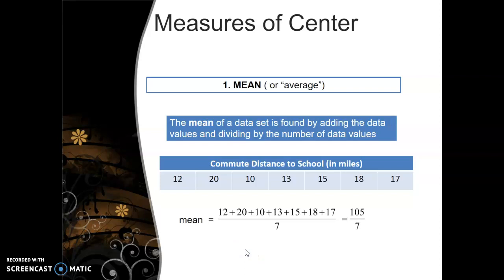In this case, we get 105 divided by 7. Now, depending on your homework problem, some homework problems will want you to write your answers as reduced fractions, and other homework problems will want you to write your answers as decimal values. In this case, it doesn't matter because 105 divided by 7 reduces to 15, so 15 is our average or our mean commute distance.